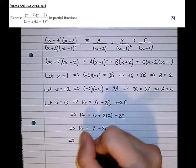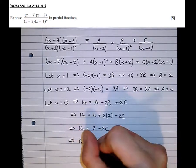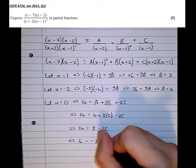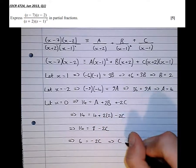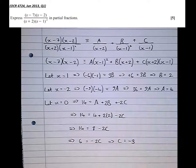Which means that, take the 8 over to the other side. 6 equals minus 2c. Which means that c equals 6 over minus 2, which is minus 3.